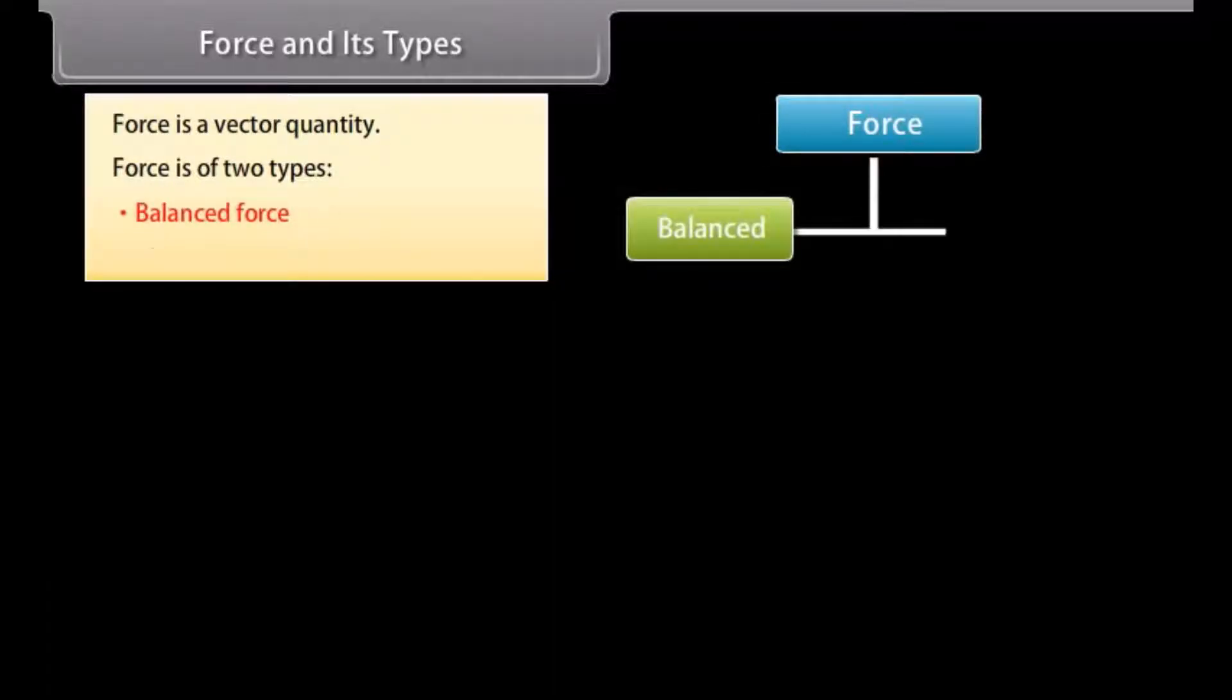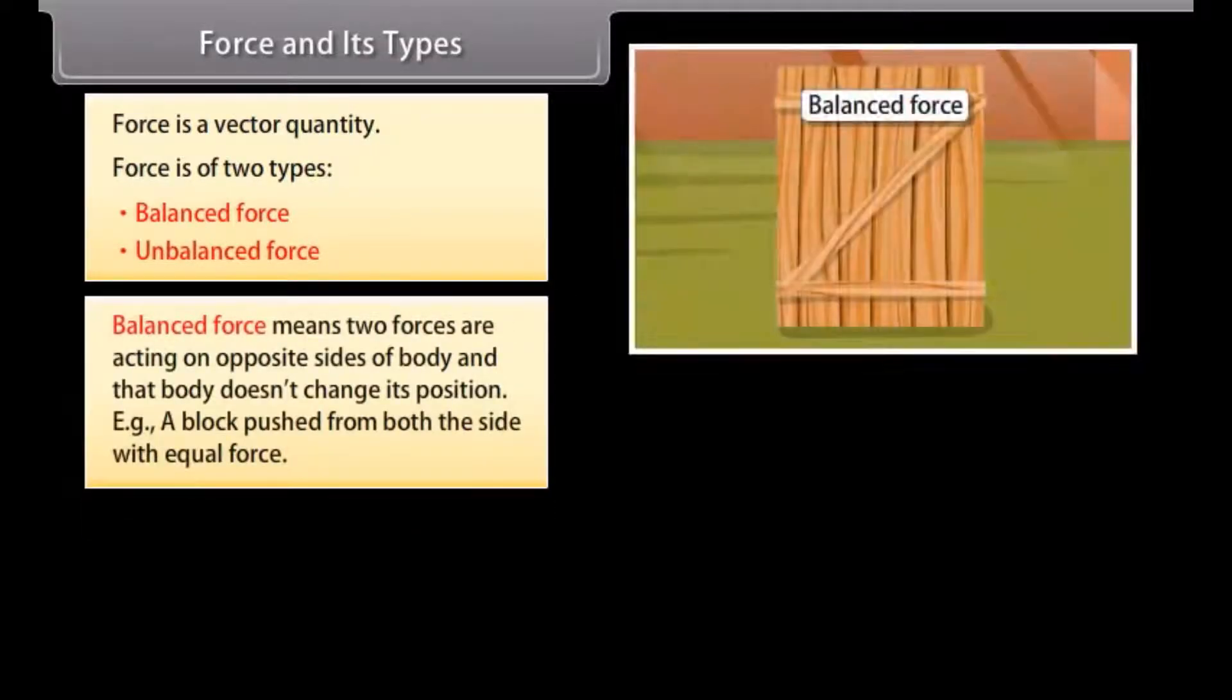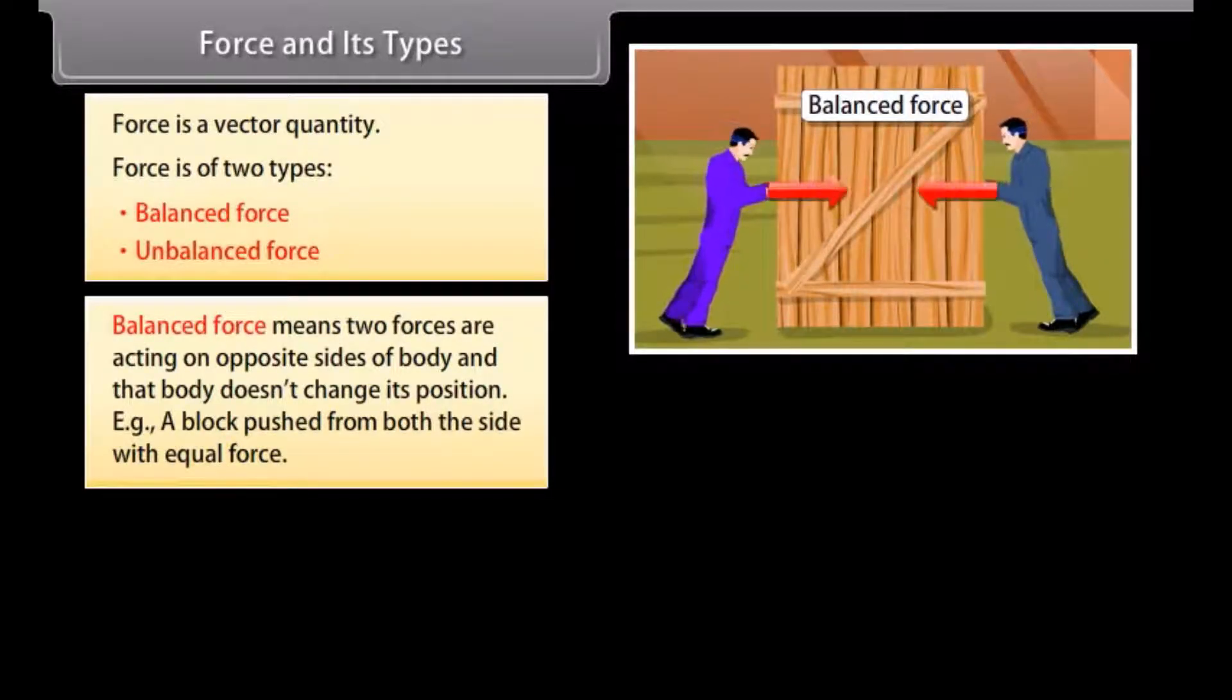Force is a vector quantity. Force is of two types, balanced and unbalanced. Balanced force means two forces are acting on opposite sides of the body and that body does not change its position. For example, a block pushed from both sides with equal force.